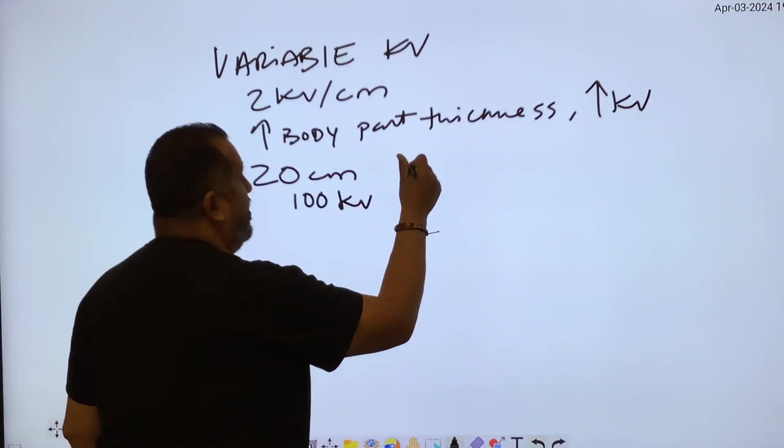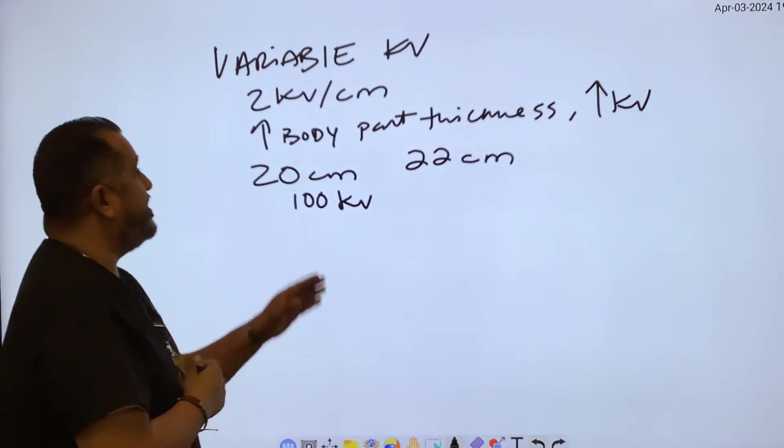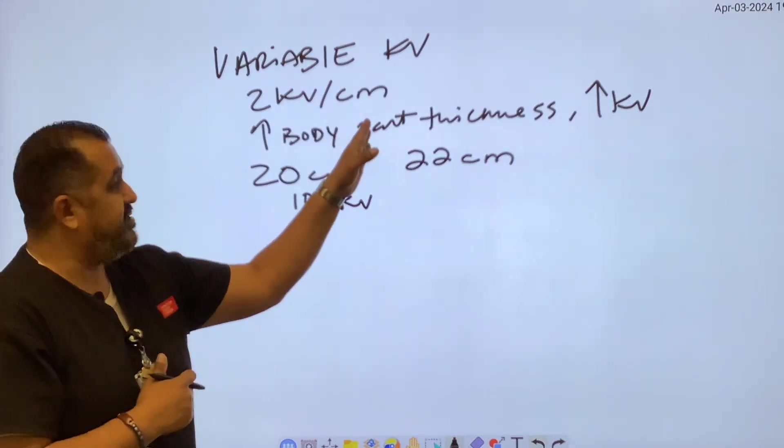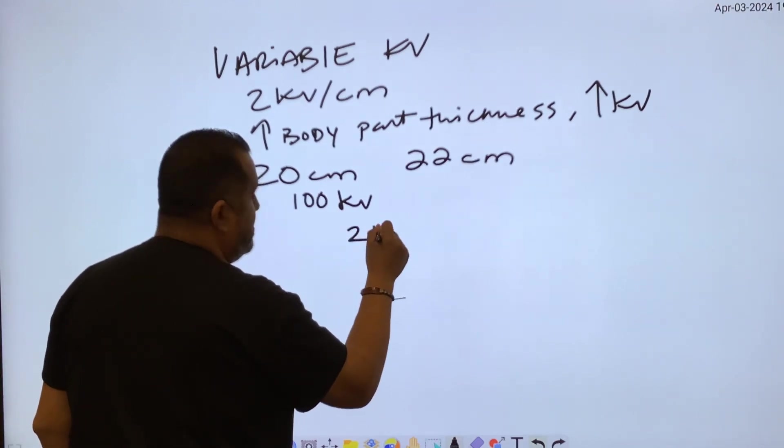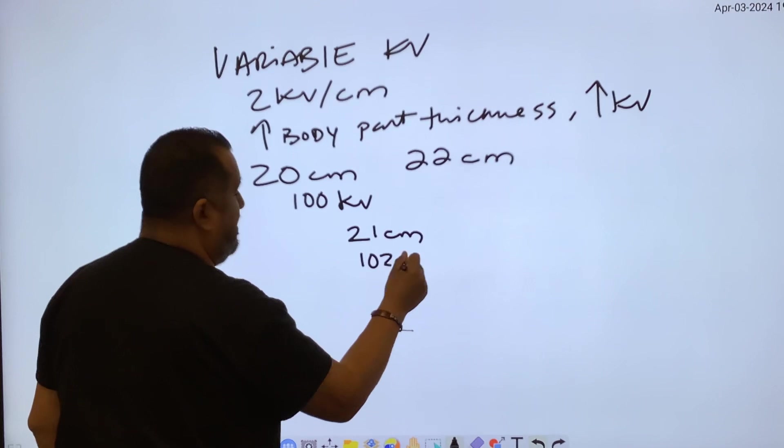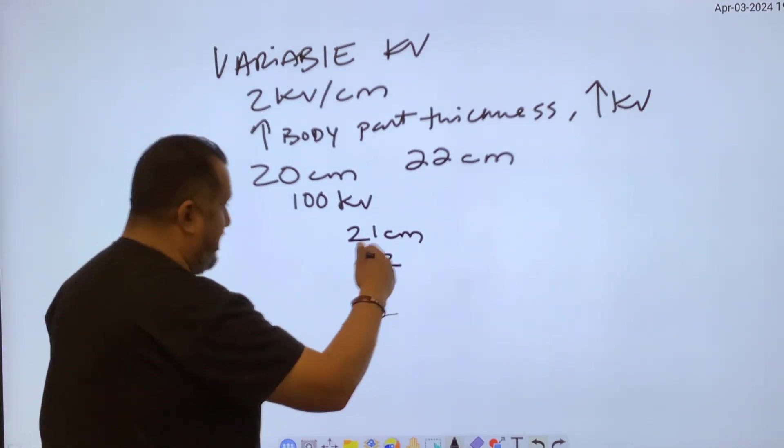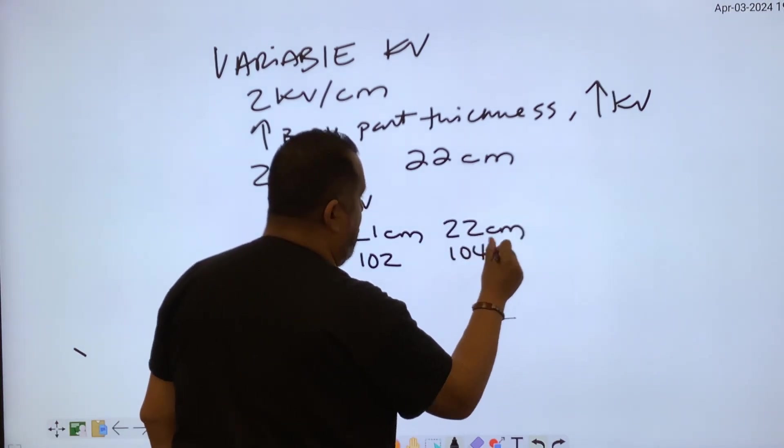Well, if you had a body part that measured 22 centimeters, we just said that it was two KV per centimeter. So I'm going to go the long way just to show you - 21 centimeter would go to 102 KV because it's two KV per centimeter. If you're at 22 centimeters, it'd go to 104 KV.